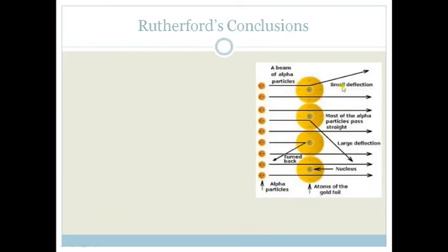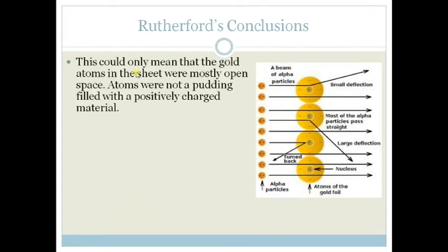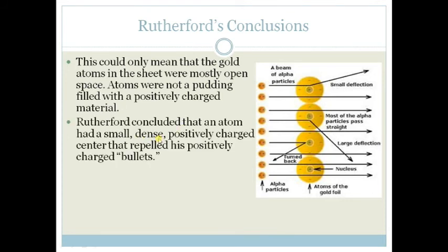So now, if you look at this diagram here on the right, you will basically see what he realized. This could only mean that gold atoms in the sheet were mostly open space. The only way the large alpha particles could pass through the atoms, the thin sheet, was if most of this was open space. So the atoms were not a pudding filled with positively charged material. They were mainly open space. He also concluded that the atom had a small dense positively charged center that repelled his bullets, his alpha particles. And he called the center of the atom the nucleus.